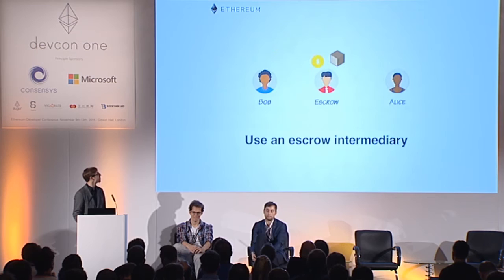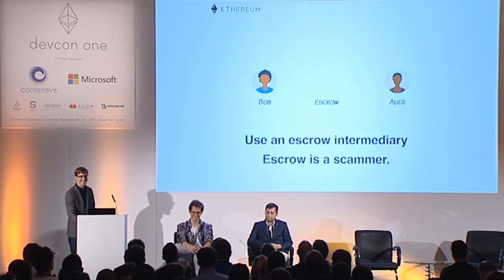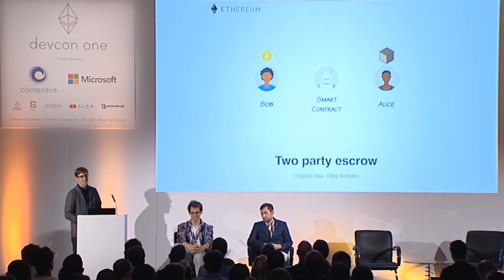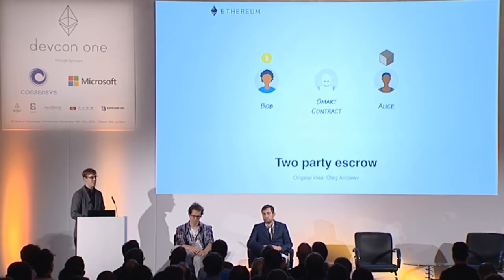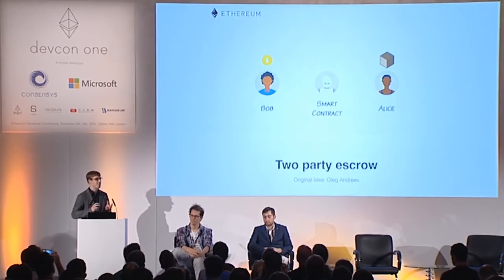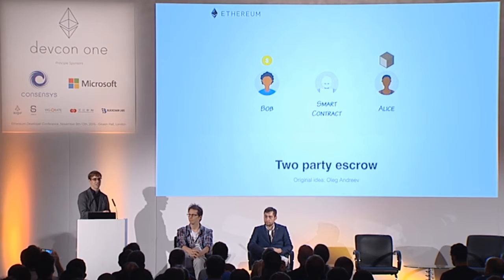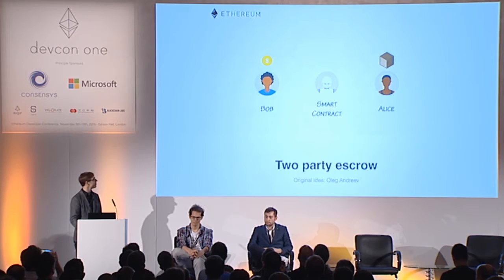Both send their stuff to the escrow, but that could also go wrong. So let's do the same thing on Ethereum where we have a smart contract that does exactly what it is programmed to do and it can never fail. Of course, it's a bit more complicated because it has to interface with the real world. We cannot really send the item to the contract, but we will do something else — this is an idea originally by Oleg and Dreef.